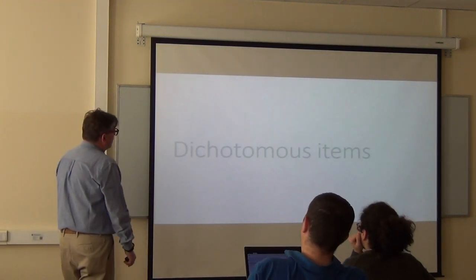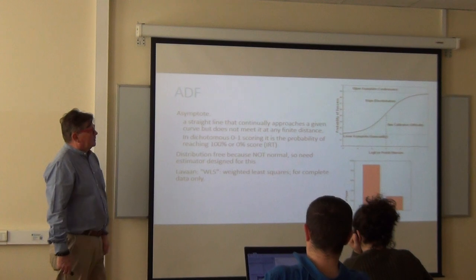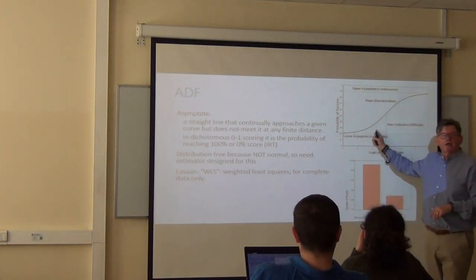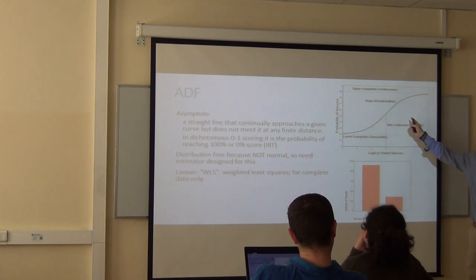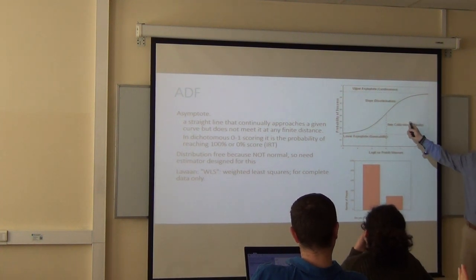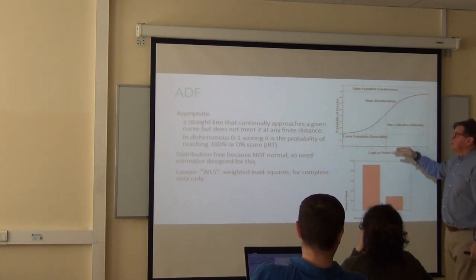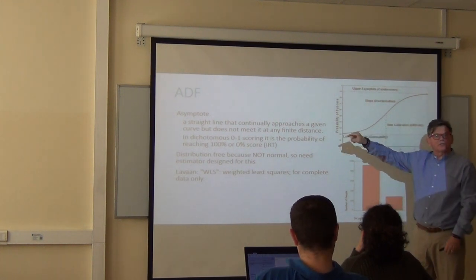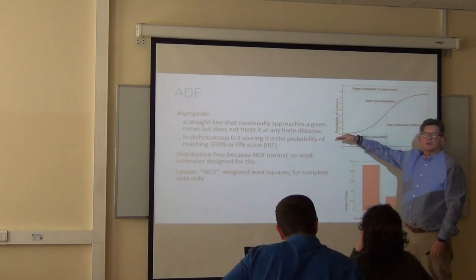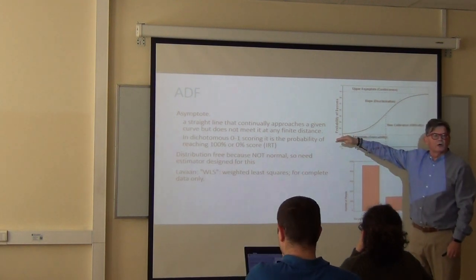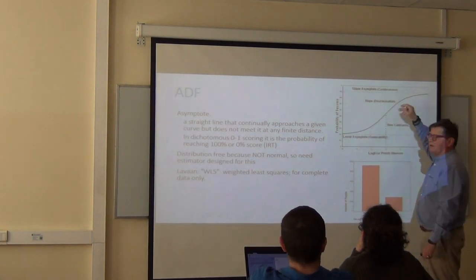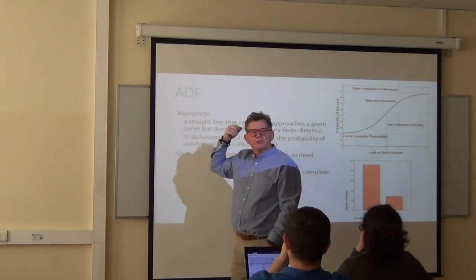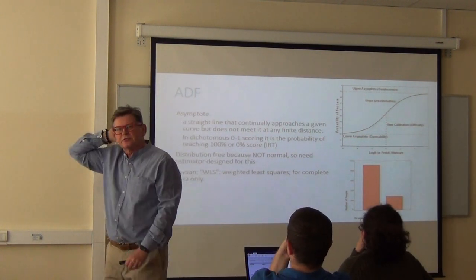For people in test development analyzing test items scored 0-1 — dichotomous, binary — we use the asymptotic distribution free (ADF) estimator. For ordinal data, that's weighted least squares means and variance. For continuous variables, there's maximum likelihood, and if you feel normality is a bit threatened or your sample size is small, you can use the robust versions. Unfortunately, AMOS can't do the robust versions, but Lavaan can. I'm going to show you in Lavaan how to do these things. For dichotomous items, this is what an item characteristic curve in item response theory looks like — ADF means the line approaches but never reaches zero, and never reaches one, because even the smartest person can still make a mistake.